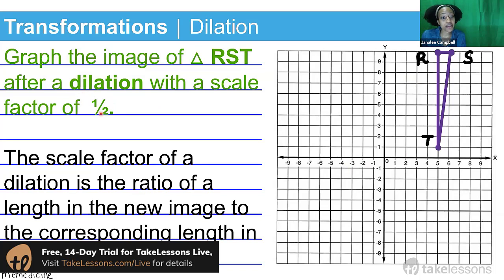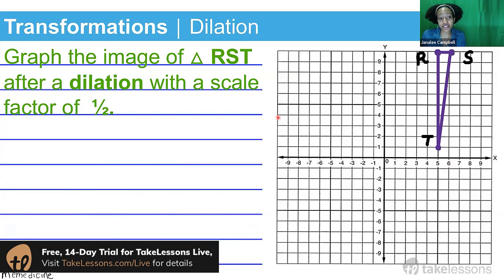So our new image, for every one unit in our new image, you're going to have two units in the original image. Currently, we're looking at the original image RST, so I'm kind of giving this to you backwards. But it's really simple to do this dilation. And this dilation is a reduction.